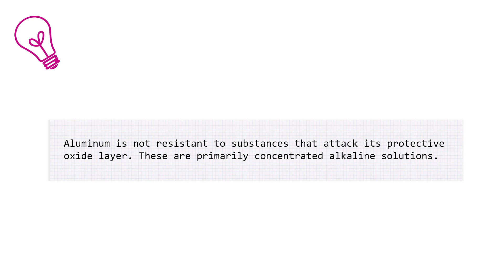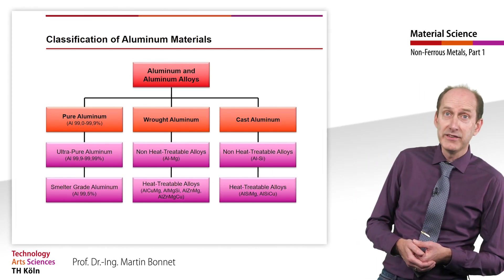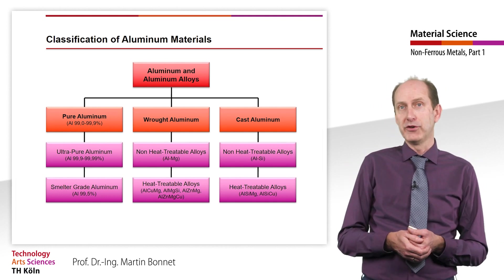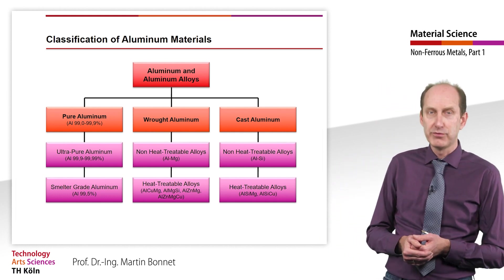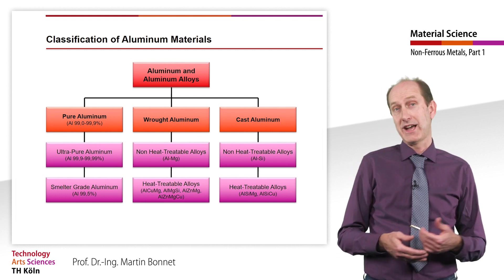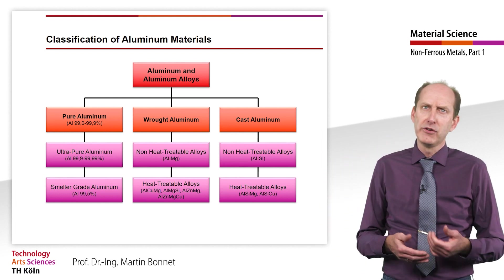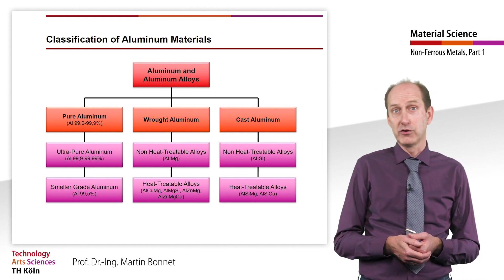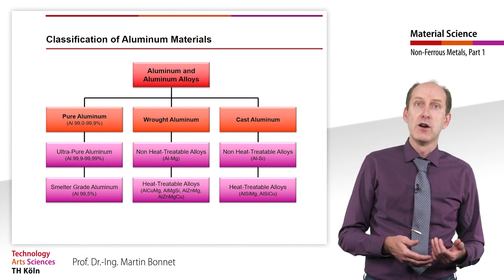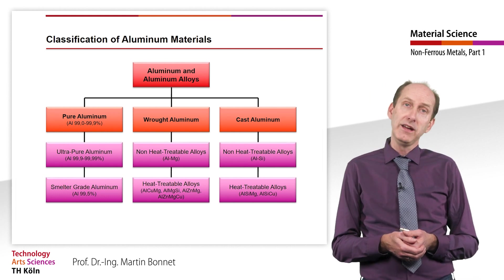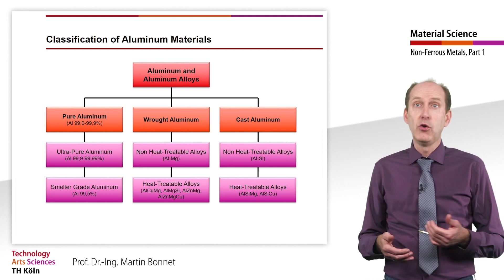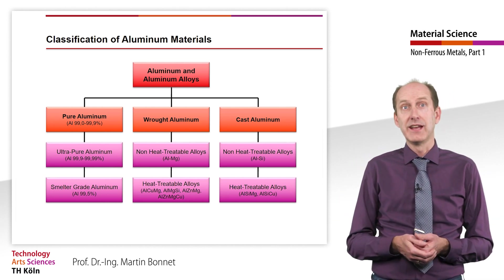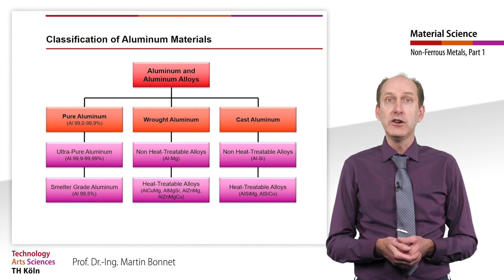Pure aluminum is aluminum with a degree of purity of 99.0 to 99.9%. Ultra-pure aluminum is obtained by a special process and has a purity of up to 99.99%. Smelter grade aluminum is the primary aluminum obtained from bauxite during the production process. Aluminum has a density of 2.7 gram per cubic centimeter and is thus about one third of the steel value of approximately 7.8 gram per cubic centimeter. However, it only has a strength of less than 60 MPa, so that its use as a construction material can only be considered if the strength is decisively increased by forming an alloy.